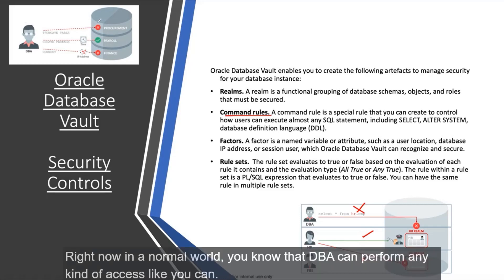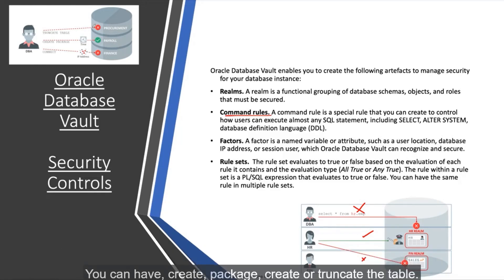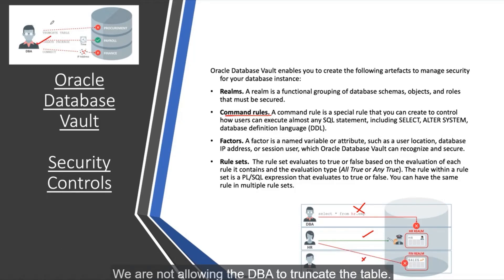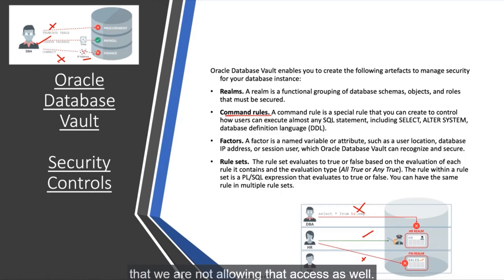In the command rule example: in a normal world, a DBA can perform any kind of access — CONNECT, CREATE PACKAGE, TRUNCATE TABLE. With a command rule, we are only allowing the DBA to CREATE a PACKAGE. The DBA is not allowed to TRUNCATE TABLE, and if the DBA tries to connect from an IP address not in the allowed range, that access is also blocked. These are our command rules.